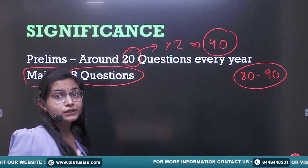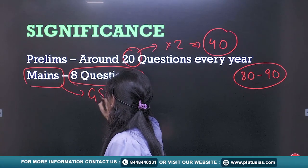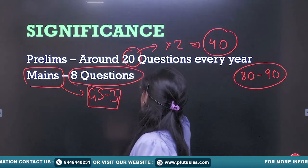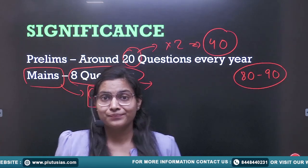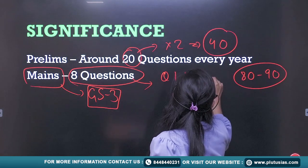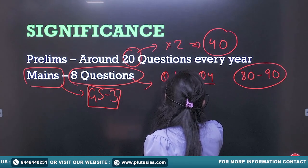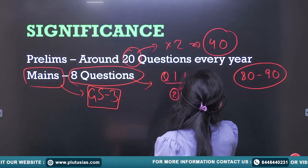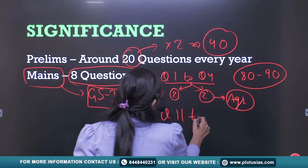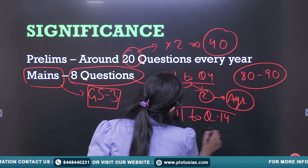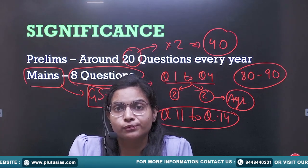In mains, around 8 questions are being asked from economy, specifically in GS3. From question 1 to question 4, they are from economy — 2 directly from economy and questions 3 and 4 from agriculture. Question numbers 11 to 14 are also from economy. You should know the marks distribution: first 10 questions are 10 marks each and the next 10 questions are 15 marks each.